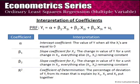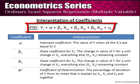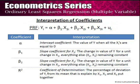Assume that our population regression function is yi = α + β₁x₁ᵢ + β₂x₂ᵢ + uᵢ. Now, alpha, which is the intercept coefficient, represents the value of y when all the xᵢ's are equal to 0.